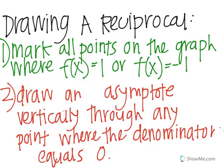To draw a reciprocal, you're going to mark all the points on the graph where f(x) equals 1 or f(x) equals negative 1, then draw asymptotes vertically through any point where the denominator equals 0. This should give you the ability to take what you know from there and draw the rest of the graph.